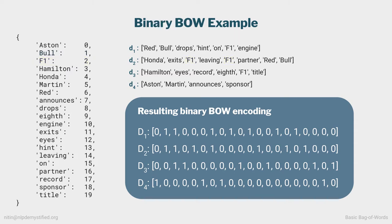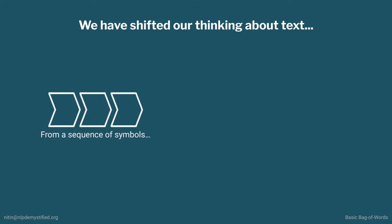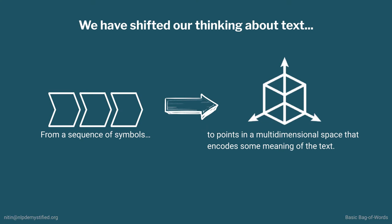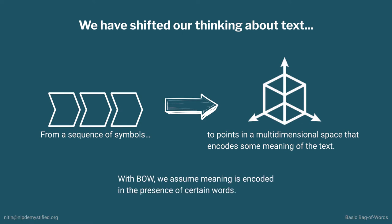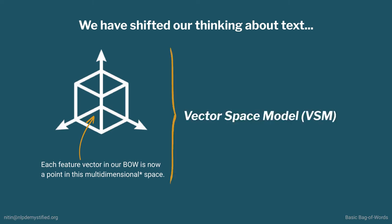So what have we accomplished? Well, we finally encoded our variable-length text as fixed-length numeric vectors, which is what we wanted. But more than that, we've shifted our thinking about text. We've gone from thinking about text as a sequence of symbols to points in a multidimensional space — specifically a space that encodes some meaning of the text. In this case, our bag of words assumes meaning is encoded in the presence of certain words.